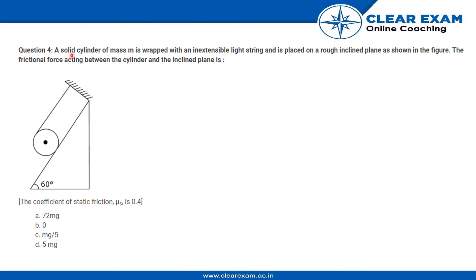The question says a solid cylinder of mass M is wrapped with an inextensible light string and is placed on a rough inclined plane as shown in the figure. The frictional force acting between the cylinder and the inclined plane is...